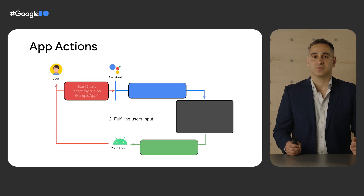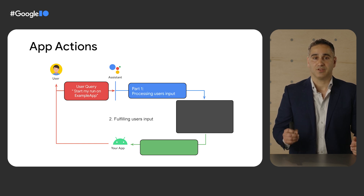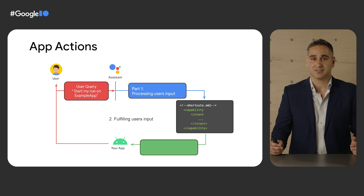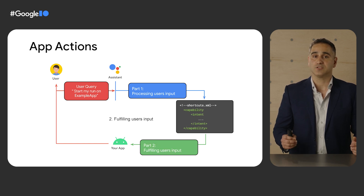Assistant performs natural language understanding on the query, matching the semantics of the request to the predefined pattern of a BII or custom intent you defined. Then Assistant generates an Android intent to launch the in-app destination of the request using information you provided in the capability and shortcuts tags. Finally, Assistant fulfills the user request by launching the generated Android intent with its resolved parameters.